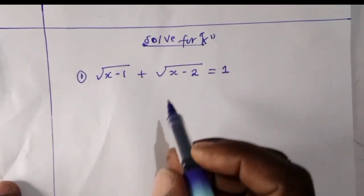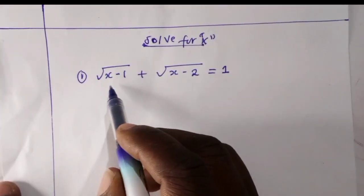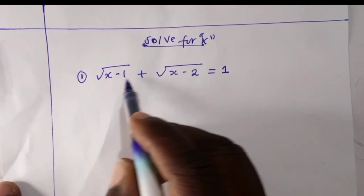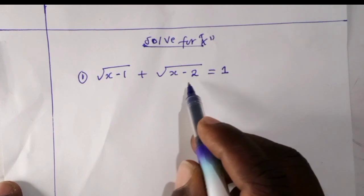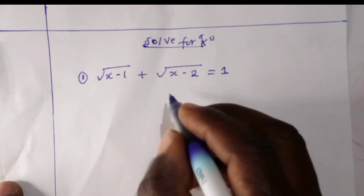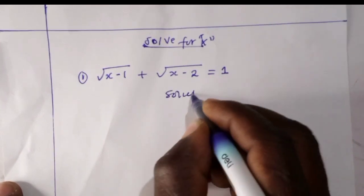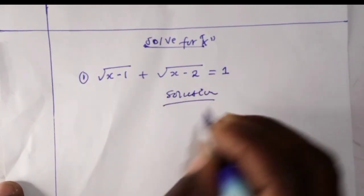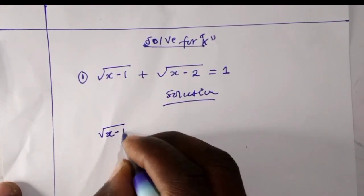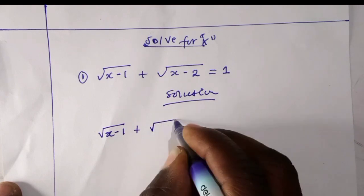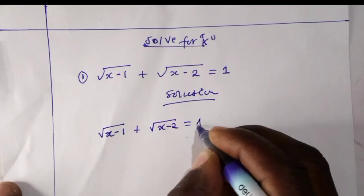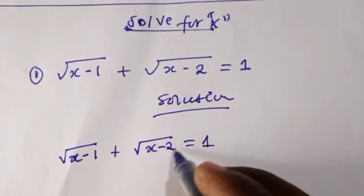Hello guys, welcome back. Today we are looking at this equation: the square root of x minus 1 plus the square root of x minus 2, which equals 1, and we are asked to solve for x. We write the question first: square root of x minus 1 plus square root of x minus 2 equals 1. If you can see, we can analyze here.